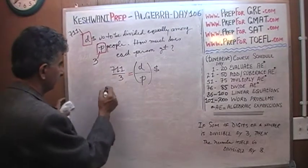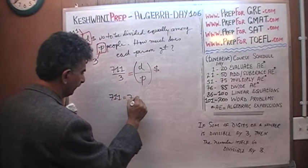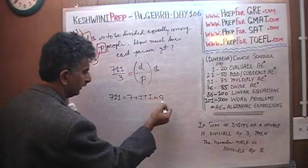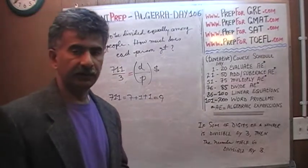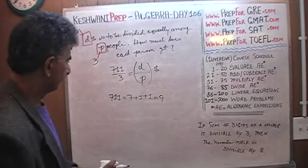Well, let's see. The sum of the digits for 711 would be 7 plus 1 plus 1. 7 plus 1 plus 1 is 9. Since 9 can be divided by 3 evenly, 711 is divisible by 3. So let's find out how much each person gets.